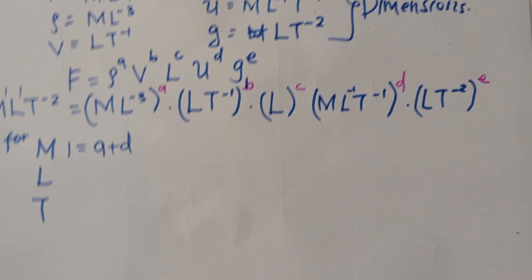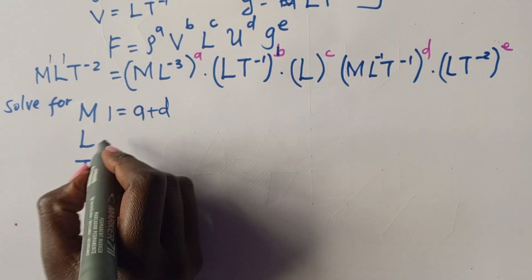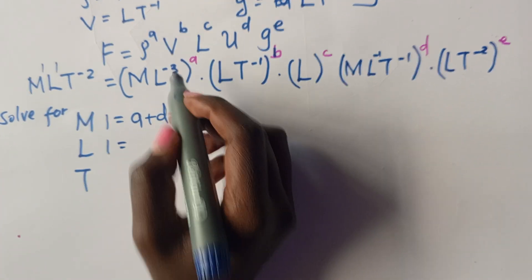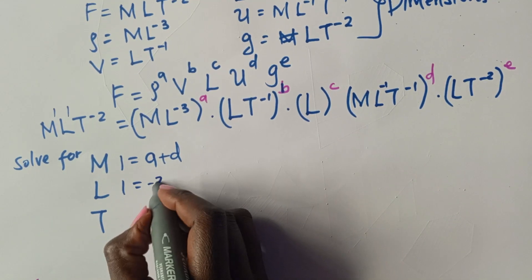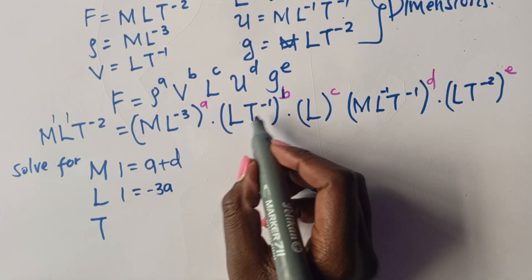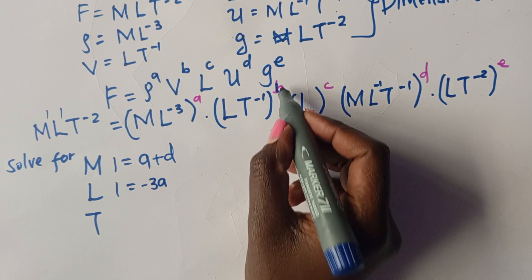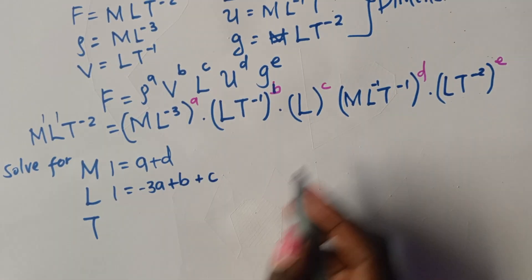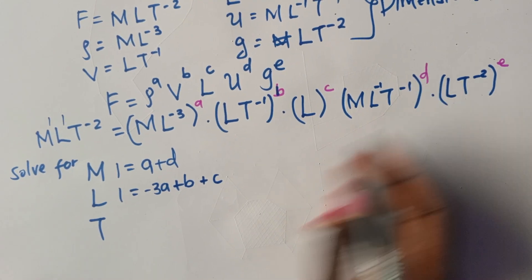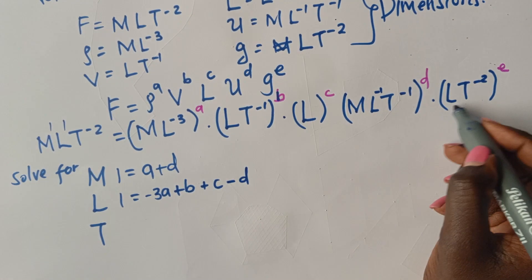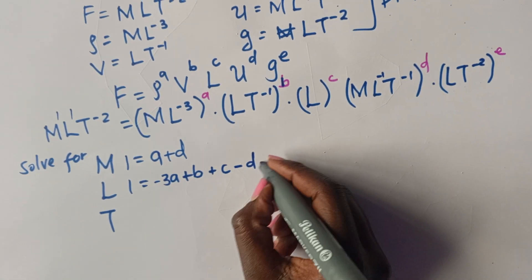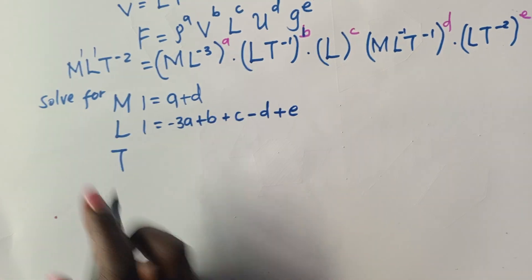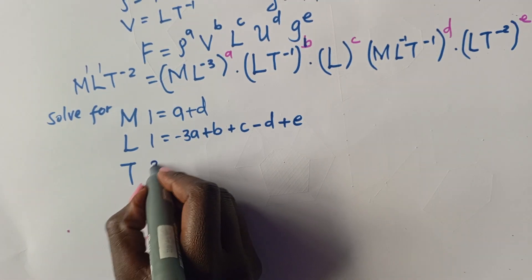For L: 1 = negative 3A plus B plus C minus D plus E. That comes from collecting the L powers across all terms on the right-hand side.